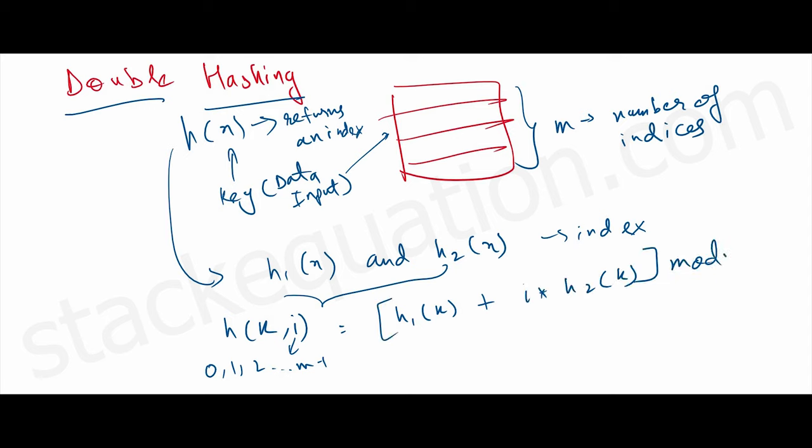At the zeroth attempt, we get one index which leads to a collision. So we move on to h(k,1), which